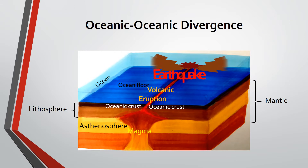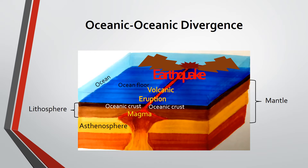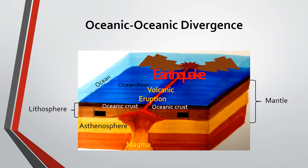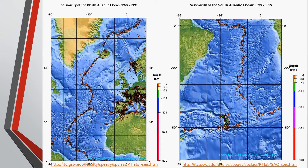Ocean ridges are very long underwater mountain systems and the largest geographic features in ocean basins. Oceanic crust continuously wells up, cools, and is progressively pushed away from the ridge. A very good example of this type of plate boundary is found at the Mid-Atlantic Ridge under the North and South Atlantic Oceans.